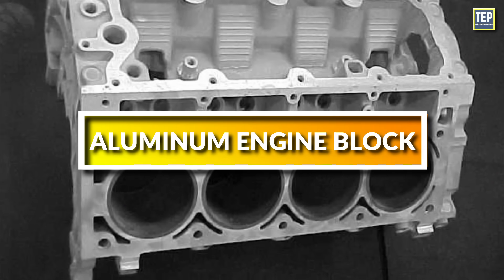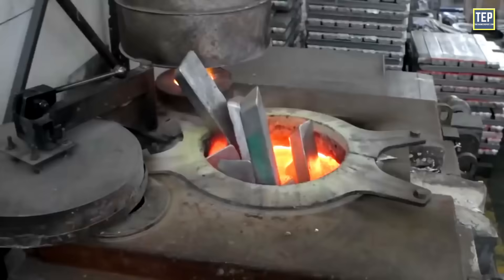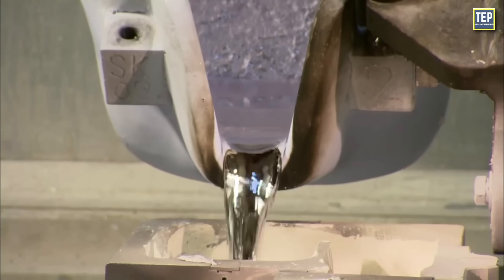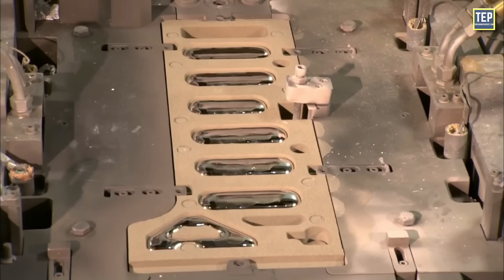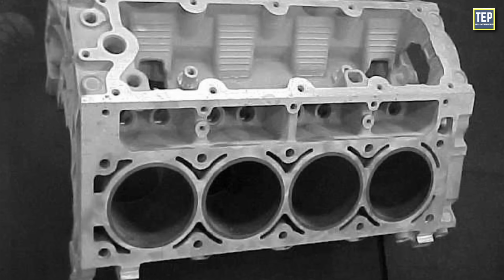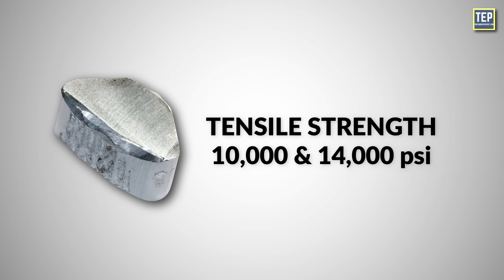Aluminum engine blocks are made from a metal alloy formed by melting aluminum. The molten metal is poured into a mold and allowed to cool and solidify. Most aluminum engine blocks are made from one of three alloys: 319, A356, or A357. Their typical tensile strength is between 10,000 and 14,000 PSI.